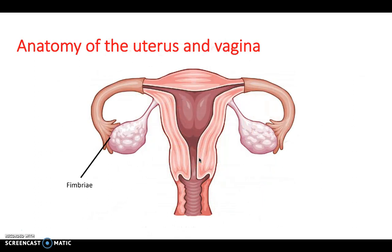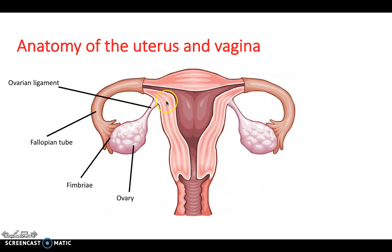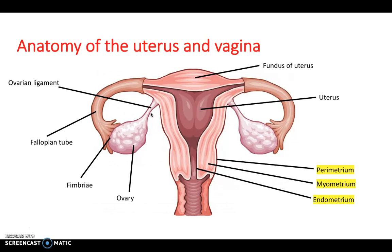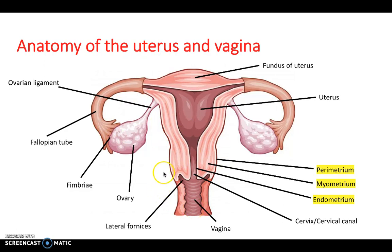Zooming in on the uterus and vagina: the fimbriae lead from the ovary into the fallopian tube, and the egg travels down into the uterus to implant in the uterine wall. The ovarian ligament holds structures in place. The top of the uterus is called the fundus. There are three muscular layers: the perimetrium, myometrium, and endometrium — the egg implants on the endometrium first. The cervix leads to the vagina, and lateral fornices can be palpated on bimanual examination.